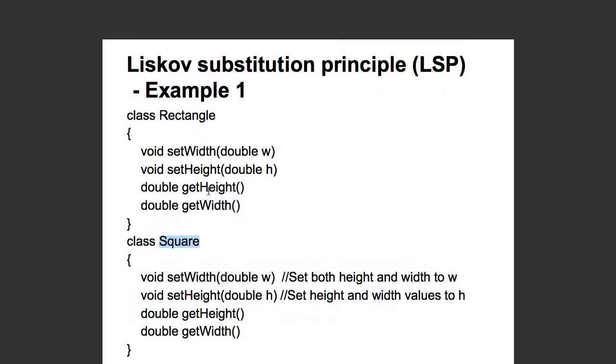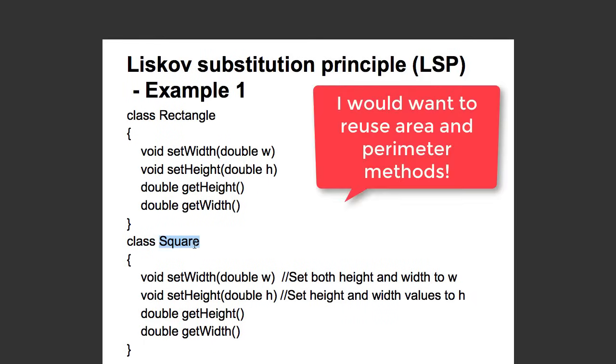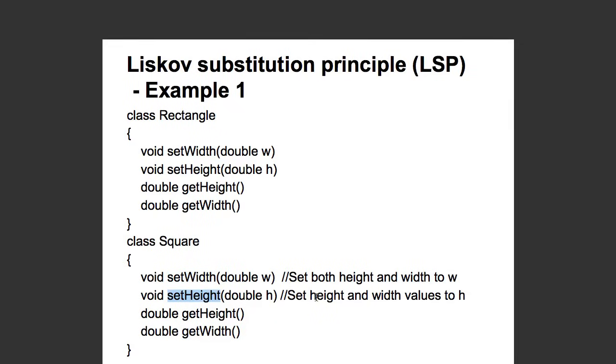And, now there is a new requirement to implement a square class. And, what I do is instead of trying to implement a square class on its own, I would try and extend the rectangle class. So, let's say I would say square extends rectangle and I create a setWidth method where I would set both height and width to w and I would do the setHeight method where it sets both height and width to h.